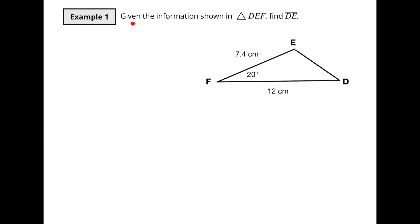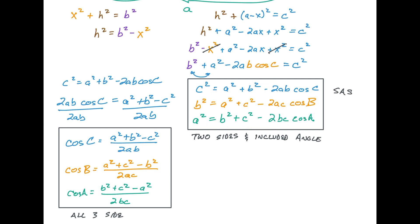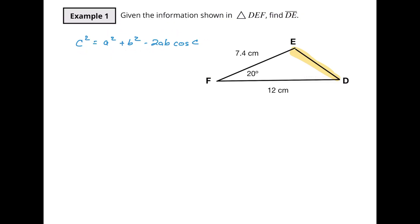It's a lot to process, but it's kind of cool to see how you can work this around. Let's get to our first example. Let's say we've got the information shown in triangle DEF and we want to find DE. I've got two sides and an included angle, so I'm going to use these formulas. The first thing you notice — because this always happens on a test — you've got a formula written a certain way and there's no A, B, and C in here.